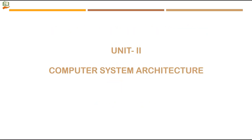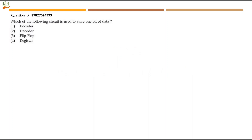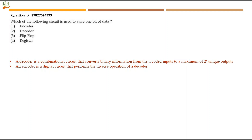Let's discuss Unit 2 Computer System Architecture solutions. Which of the following circuits is used to store one bit of data? A decoder is a combinational circuit that converts binary information from encoded inputs to a maximum of 2^n unique outputs — n inputs to 2^n outputs. An encoder performs the inverse operation, with 2^n inputs and n outputs. So neither is about storing one bit of data.